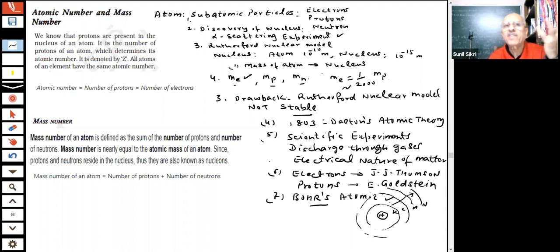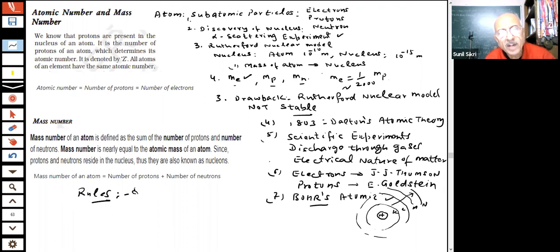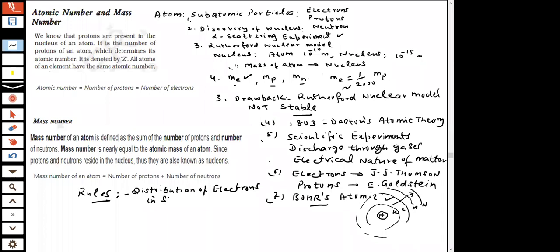We have given the distribution of electrons in different orbits and shells using the scheme by Bohr and Bury. What are the rules for writing the number of electrons in different energy levels? The maximum number of electrons that can be accommodated in the outermost orbit is 8, and electrons are not accommodated in a given shell unless the inner shells are filled.